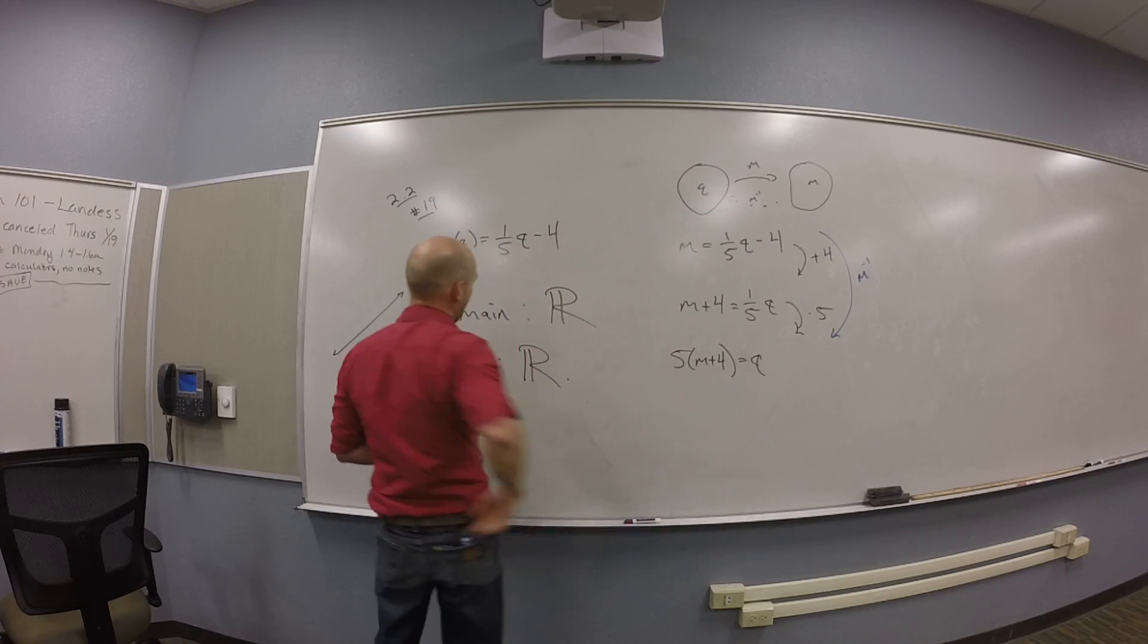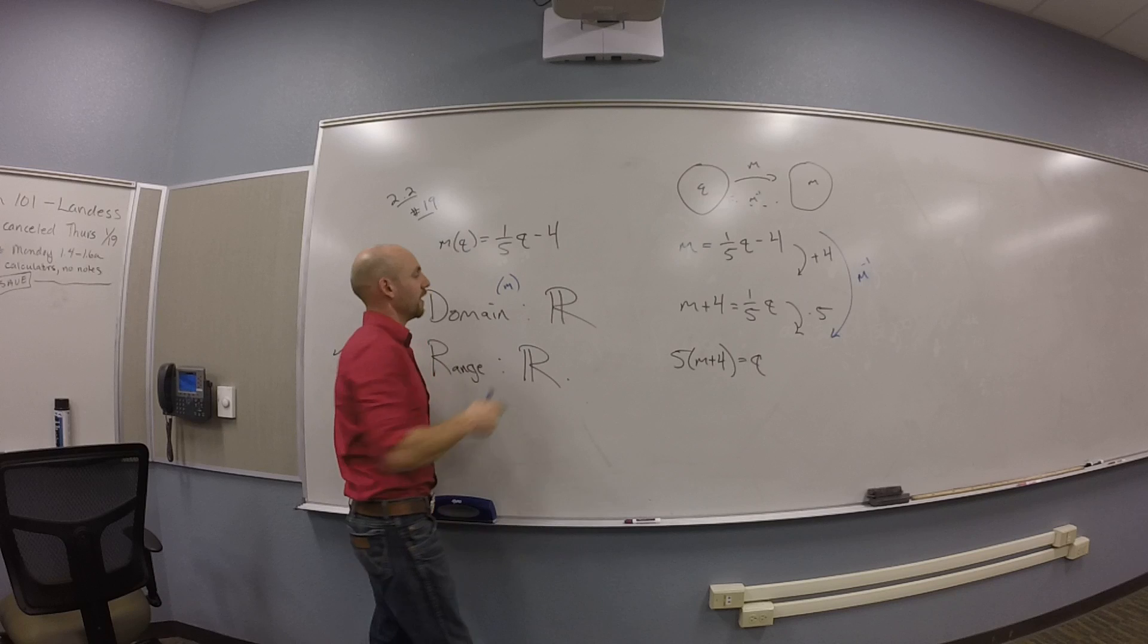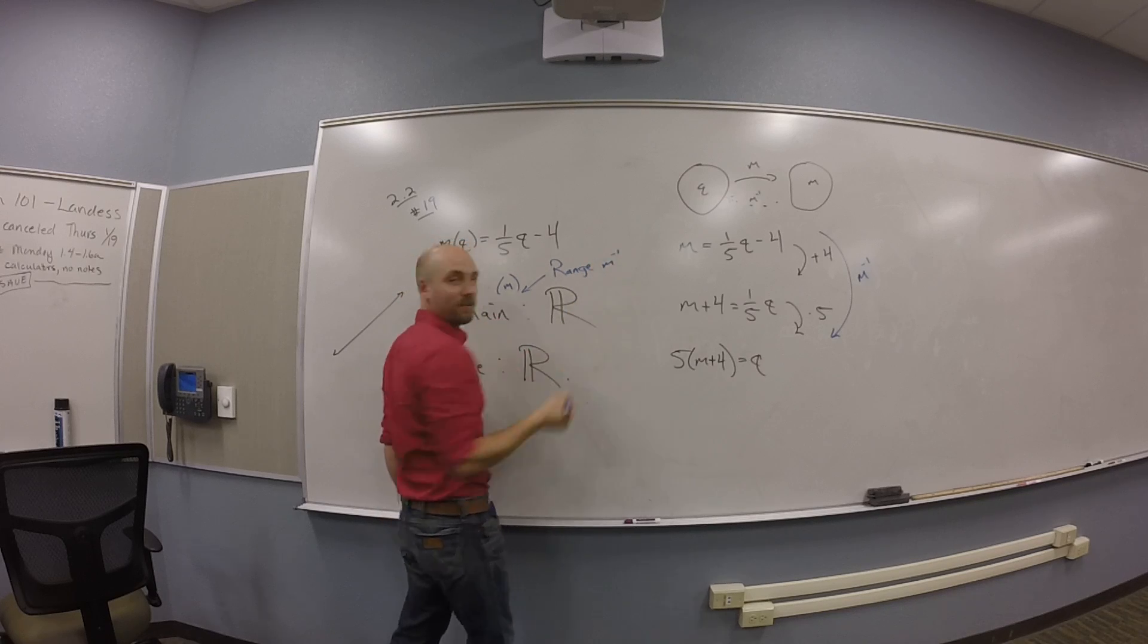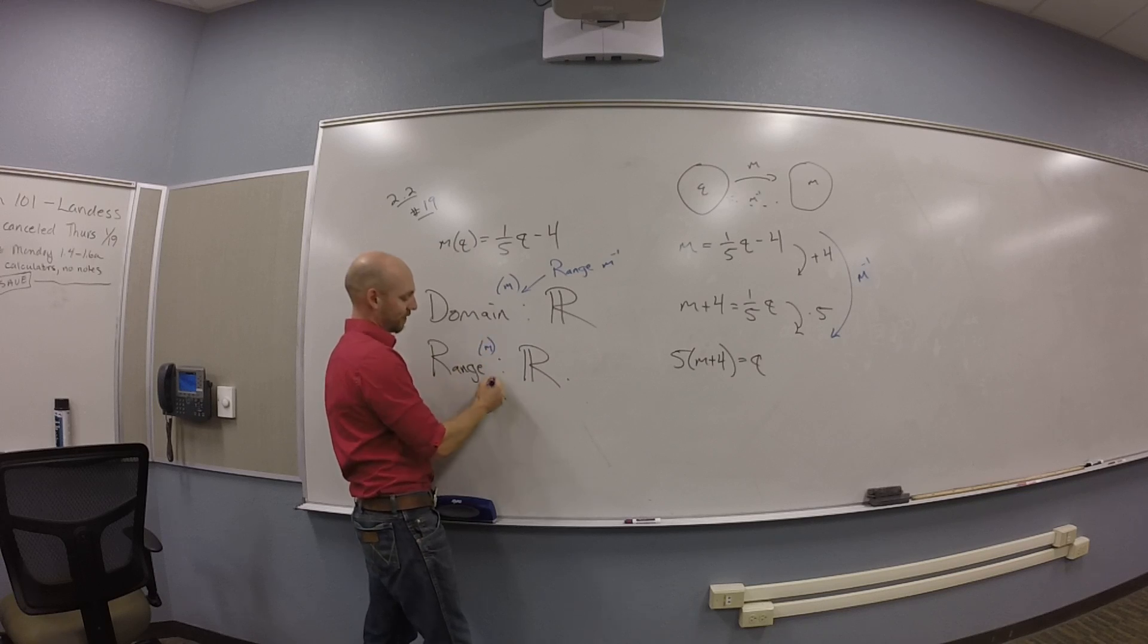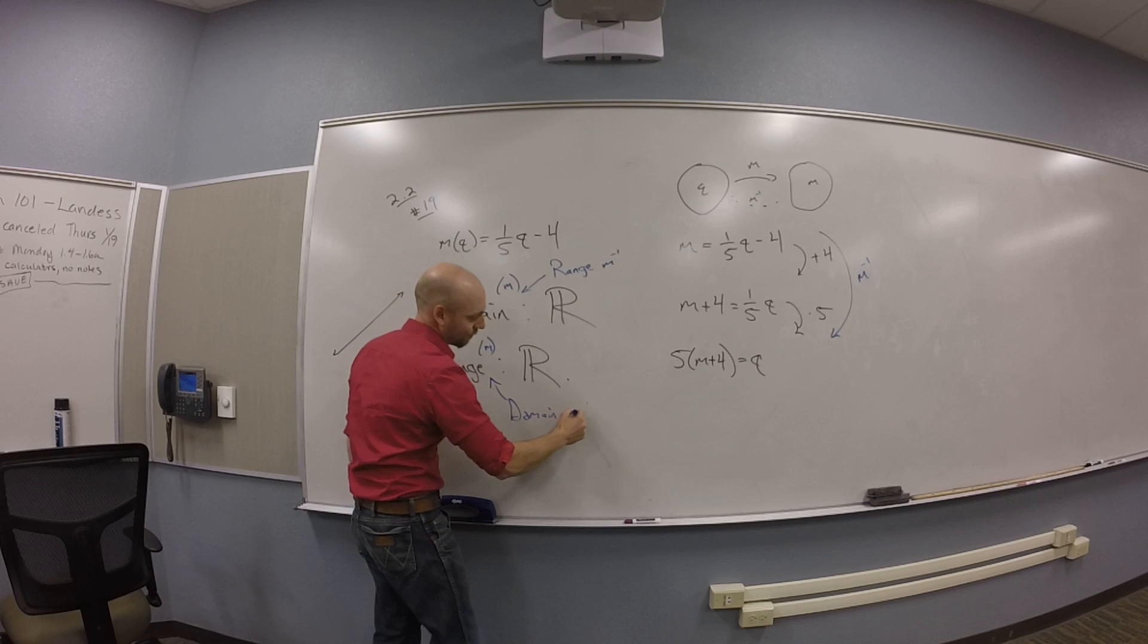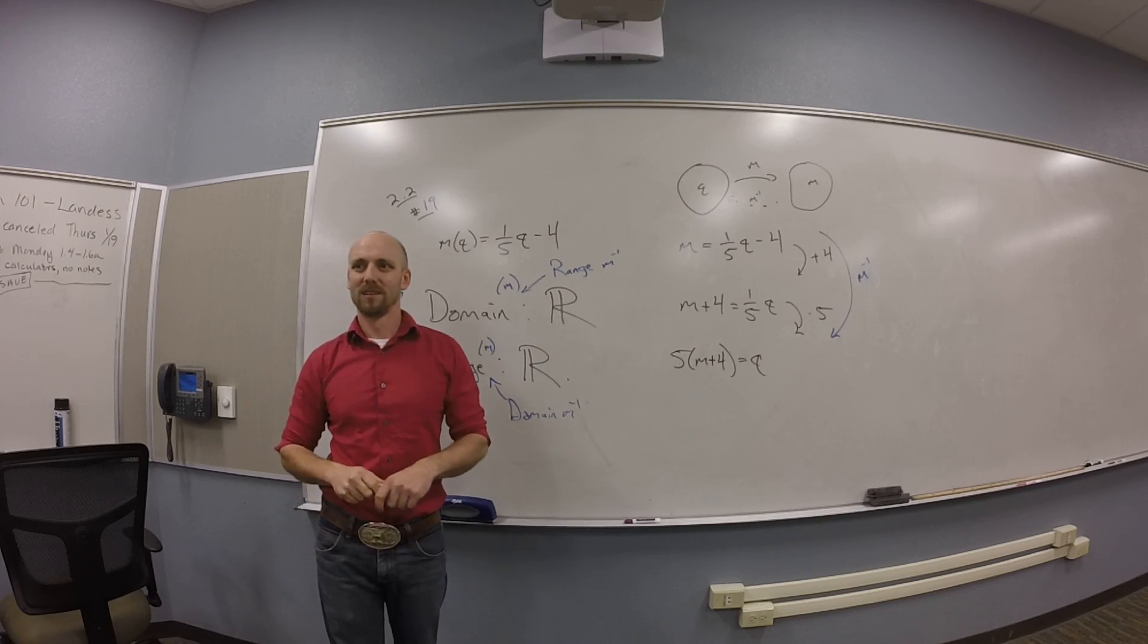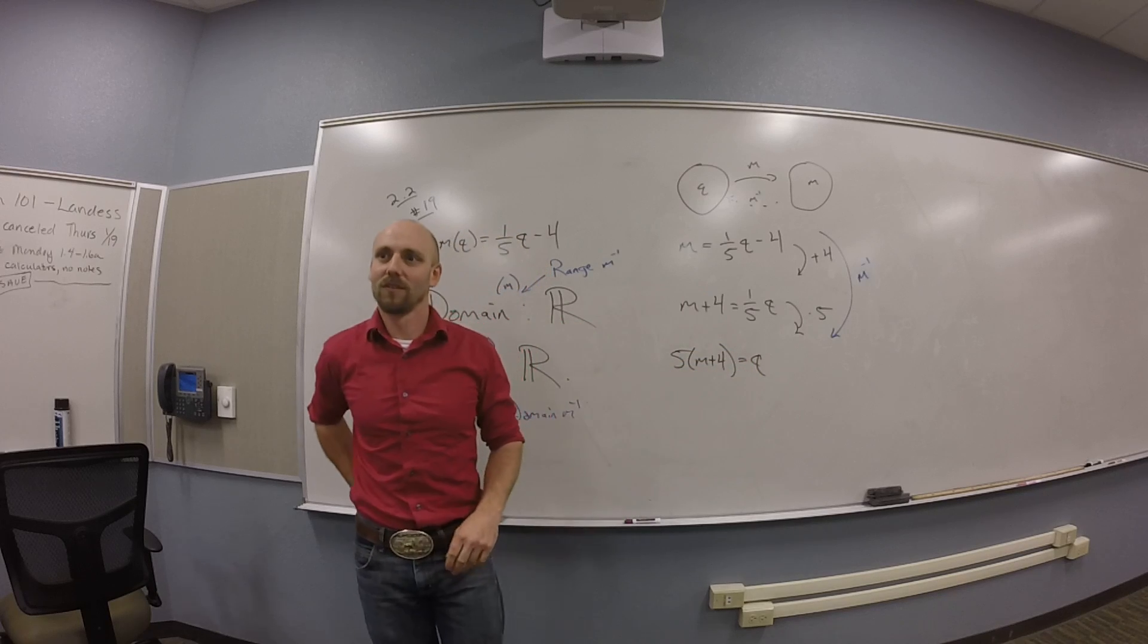So this domain is really of m, right? And that thing is the range of m inverse, and the range of m is the domain of m inverse. Really, it's just the bubble diagram goes backwards. You guys see that? Be really careful with that. You guys know how to solve more things that are really functions.